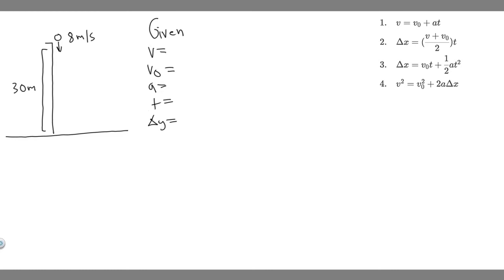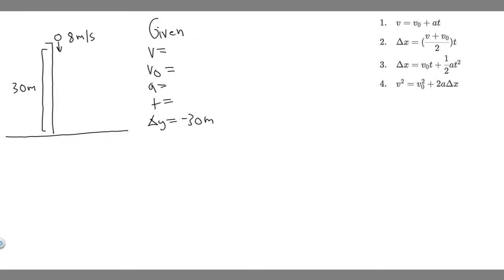What's the change in Y? It starts at 30 meters and goes to 0, so the change in Y is going to be minus 30 — because it's going down 30 meters. We say upwards is positive and downwards is negative, so it's losing 30 meters. Time is what they want us to solve for, so that's a question mark.